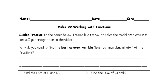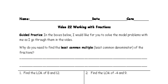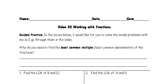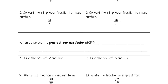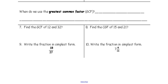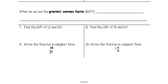Take out your homework assignment. This is video 22, working with fractions — it looks like this sheet here. First off, why do we need to find the least common multiple? It's oftentimes referred to as the least common denominator, or LCM. Why do we have to find that with fractions?